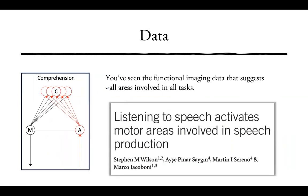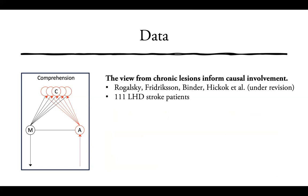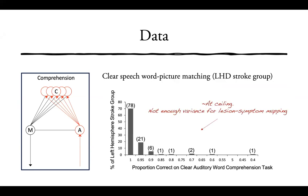Let's look at some data to see whether this idea has panned out. Functional imaging data suggest that pretty much all areas are involved in all tasks — for example, listening to speech clearly activates motor areas involved in speech production. I want to focus instead on chronic lesions to inform us about causal involvement. The study involves over 100 left hemisphere damaged stroke patients. One task was a four-alternative forced-choice auditory word-picture matching task with phonological and semantic foils, presented as clear speech and in noise. We also had a word and non-word discrimination same-different task.